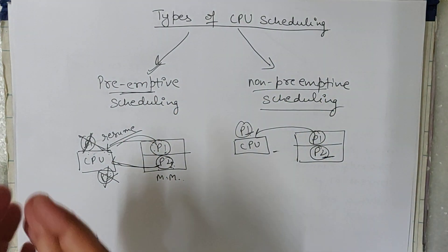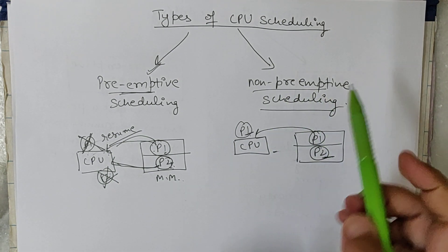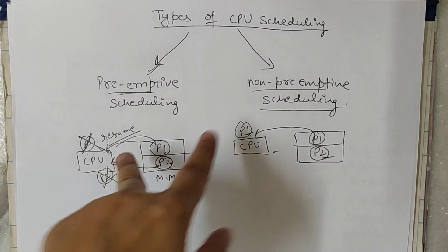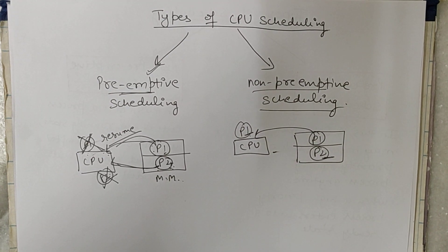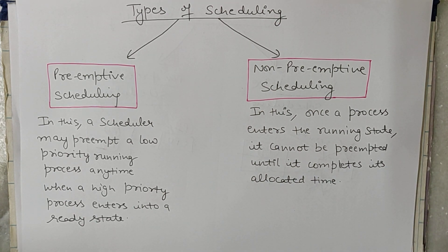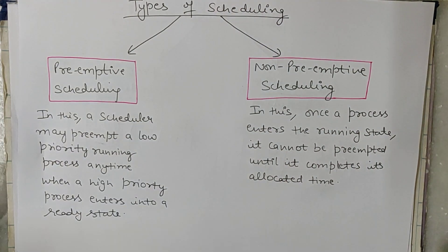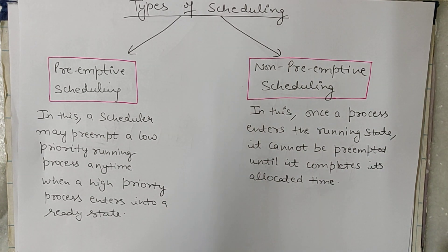So these are the two broadly categorized types of CPU scheduling algorithms: preemptive scheduling and non-preemptive scheduling. Under these two broad categories, we have various specific CPU scheduling algorithms, which I will discuss in the next tutorial. I hope the concept of preemptive and non-preemptive scheduling, as well as the need for CPU scheduling, is clear now.